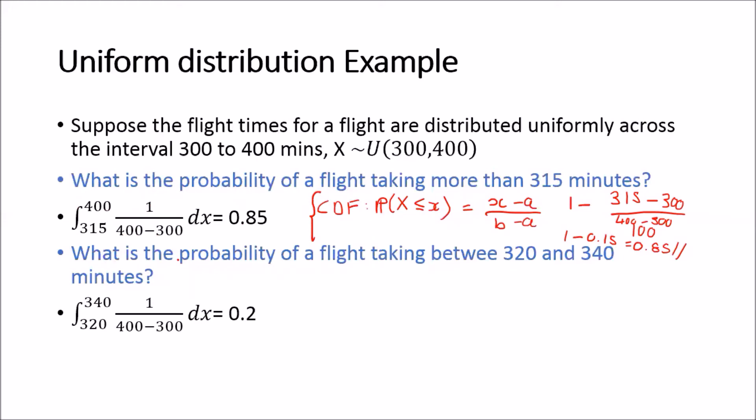Then the next question is, what is the probability of a flight taking between 320 and 340 minutes? So we will need to do the integral from 320 to 340 of 1/(400-300) dx. And we know that this will resolve to 0.2. How do we go about showing that?